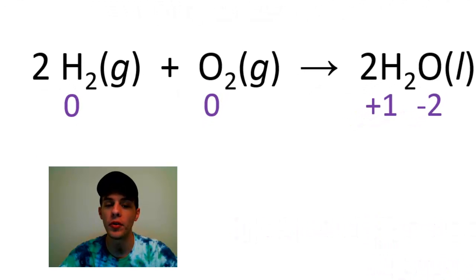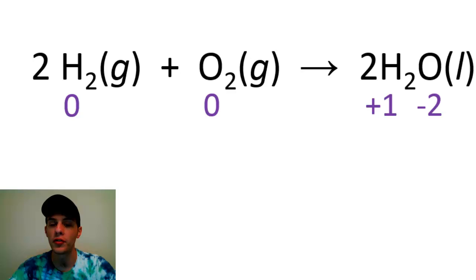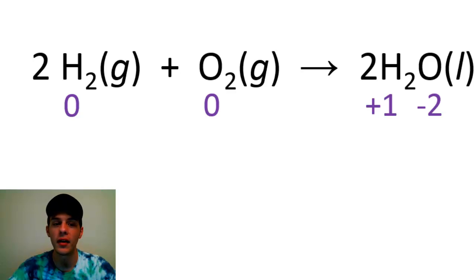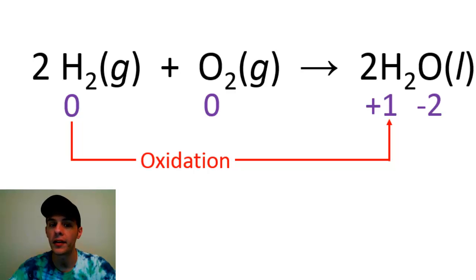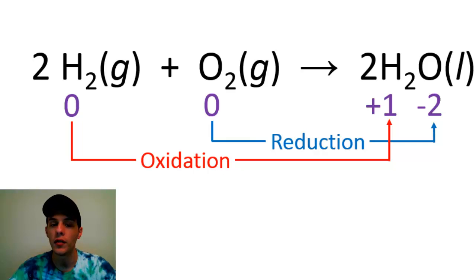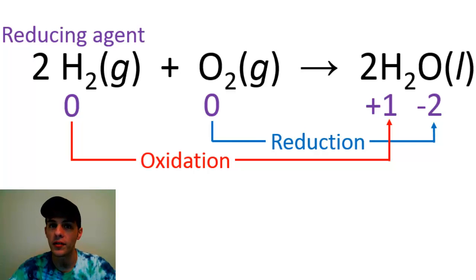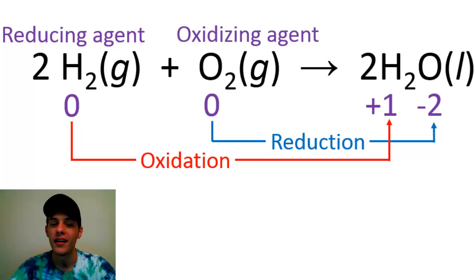Now we can figure out which element undergoes oxidation and which undergoes reduction. Remember, oxidation is the loss of electrons, so if something is increasing in oxidation state, it is becoming oxidized. Hydrogen goes from an oxidation state of zero to +1, so hydrogen is undergoing oxidation. Oxygen goes from zero to −2, which corresponds to reduction. Therefore, oxygen is undergoing reduction and hydrogen is undergoing oxidation. Furthermore, since hydrogen is undergoing oxidation, hydrogen is the reducing agent, and since oxygen is undergoing reduction, oxygen is the oxidizing agent.